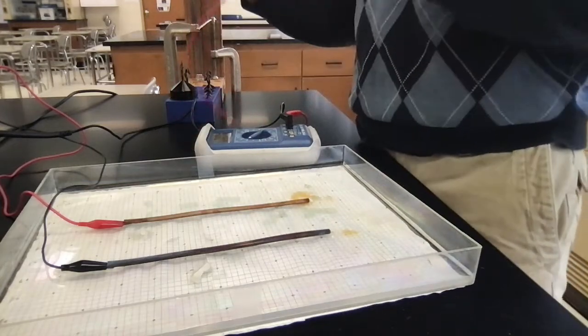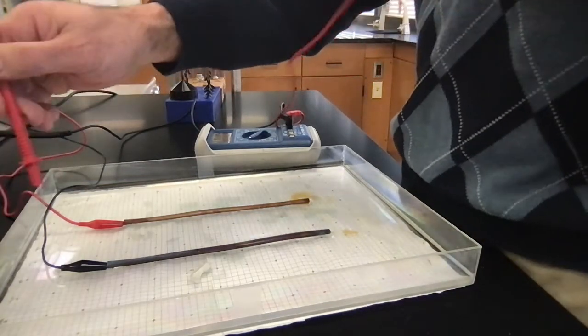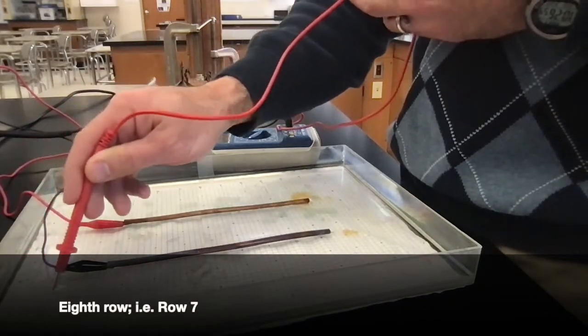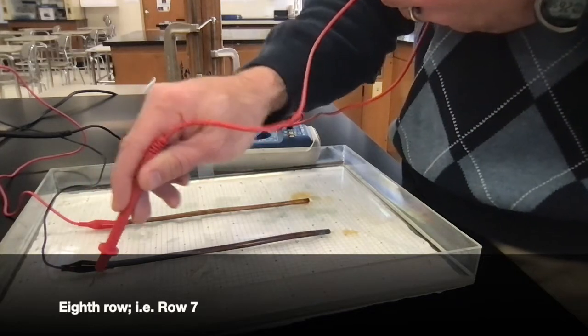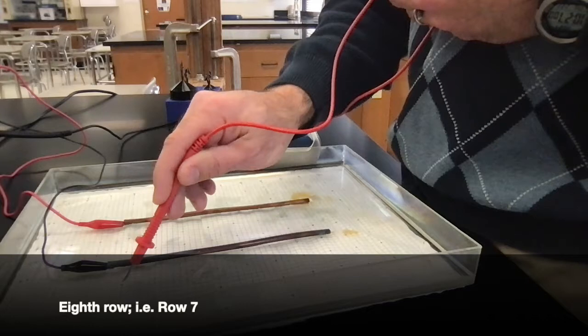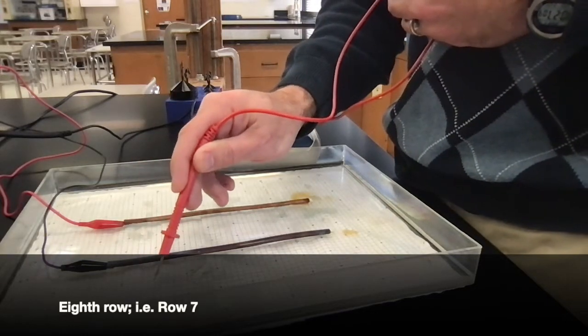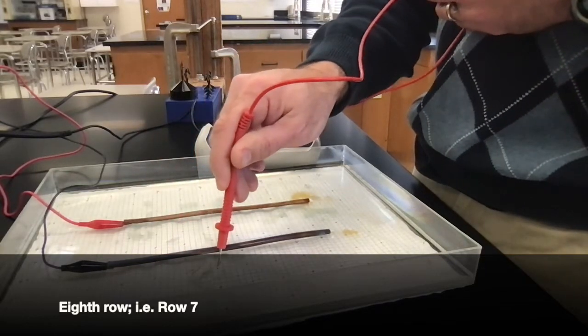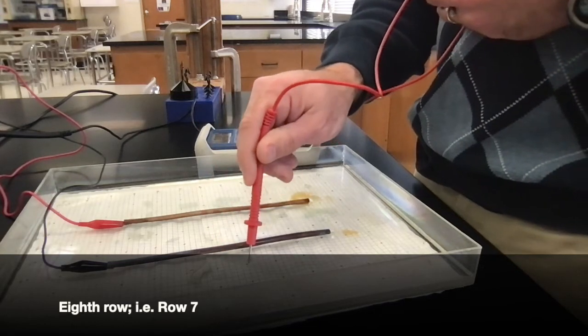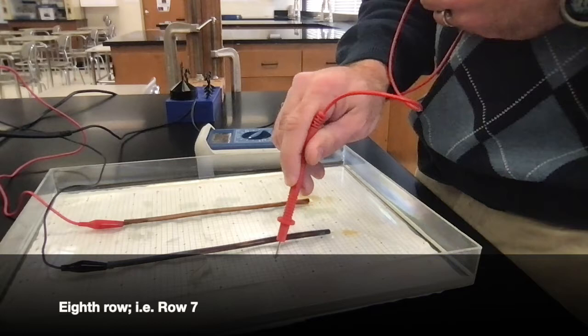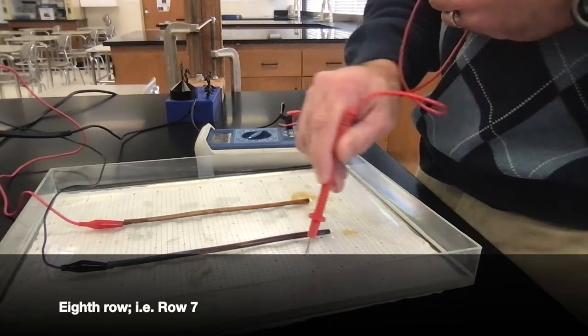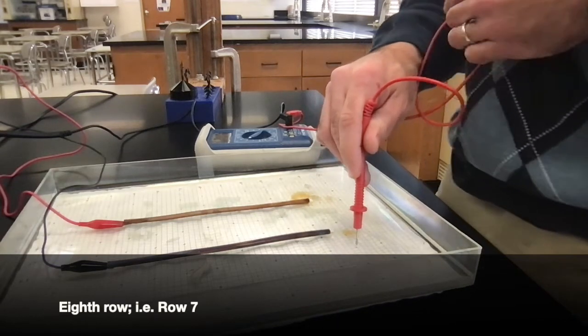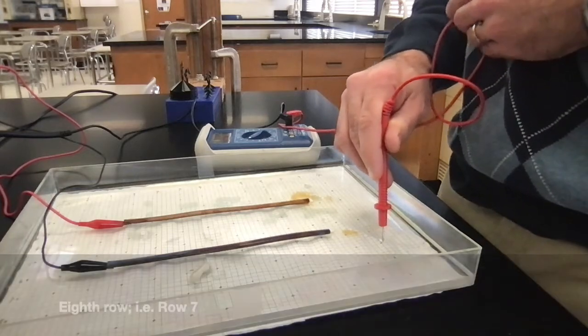Down to the eighth row labeled as row 7. First column 0 is 3.0, 1 is 2.7, 2 is 1.9, 3 is 1.2, 4.9, 5 is 0.8, 6 is 0.7, 7 is 0.8, 8 is 0.9, 9 is 1.1, 10 is 1.6, 11 is 2.4, 12 is 3.1.